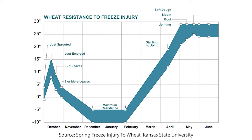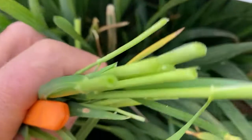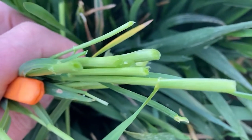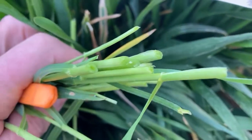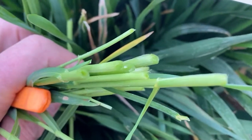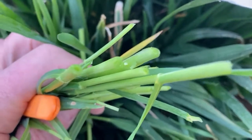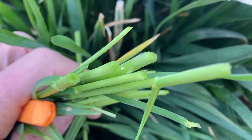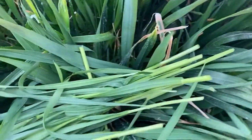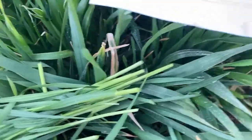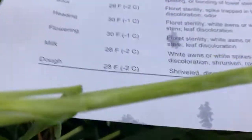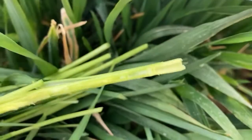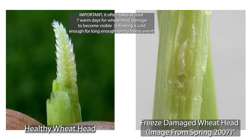If you use a sharp knife and cut the plants level at the soil surface and you see hollow stems like I'm showing here, that tells you the stems with a hollow stem have jointed, meaning the head is above the soil surface. Using a sharp knife, carefully cut the stem open and look for the primordial grain head.